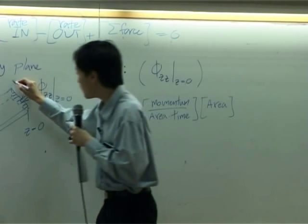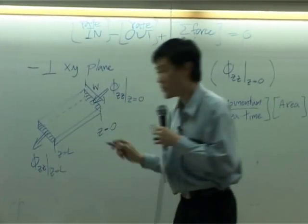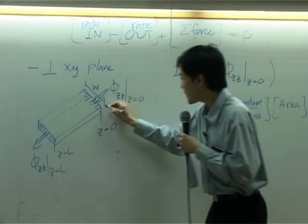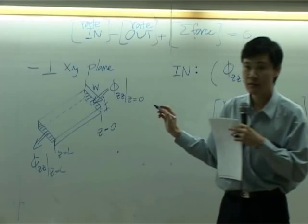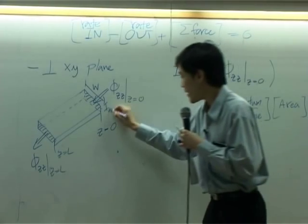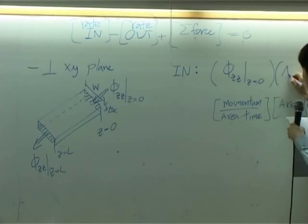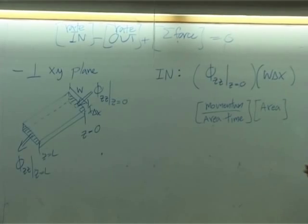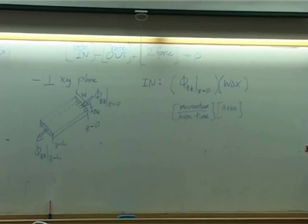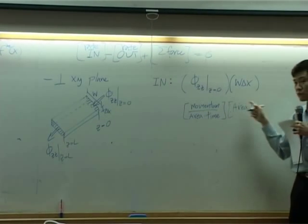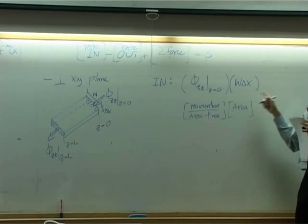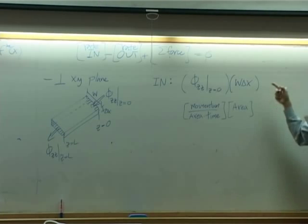We know that the width here is W, and the thickness is delta x. So the area shaded here is delta x times W, or W times delta x. All right. By multiplying these two terms together, you will get the rate of momentum going in.